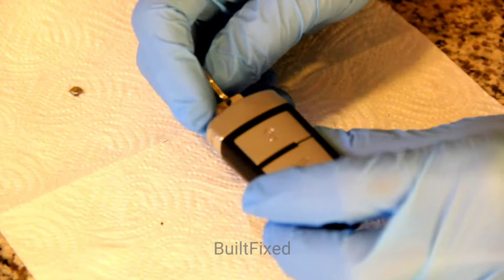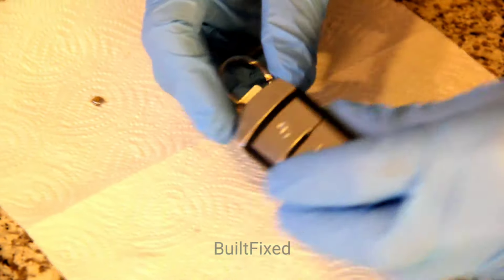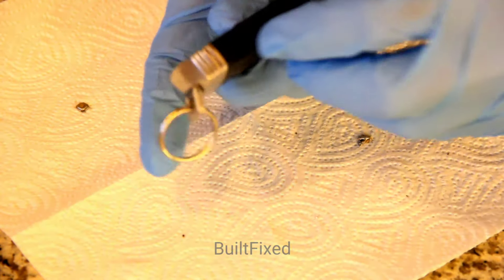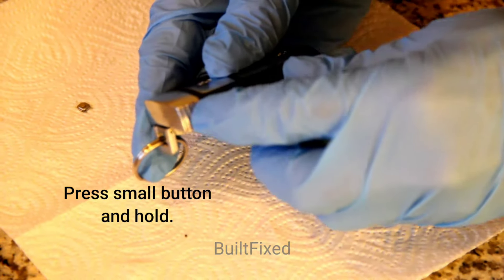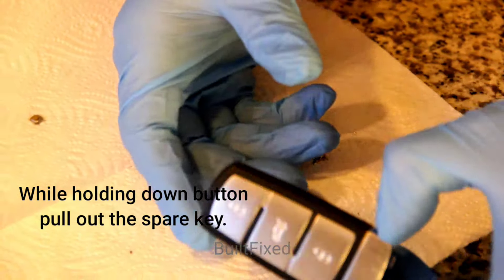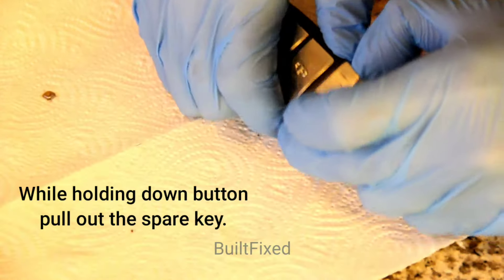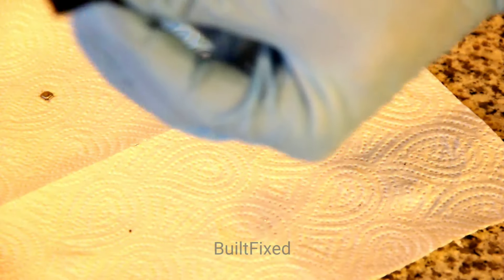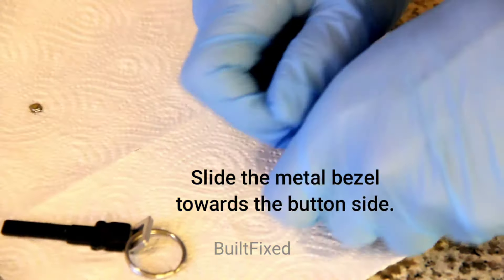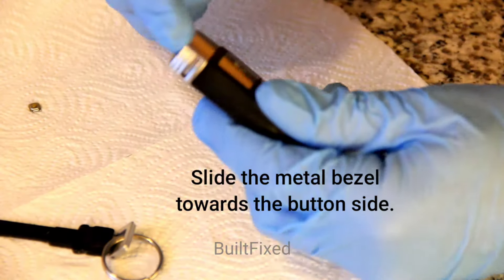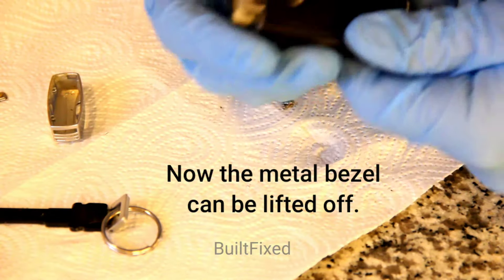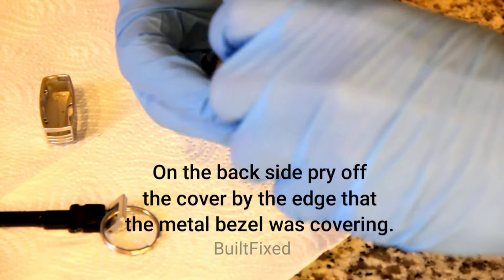So here are the basic steps to, first of all, take apart your three-button key fob from VW or Audi. Press a small detent right here on the side. After it's pressed, you're able to slide out the key. Now firmly grab the key fob and you want to slide this metal bezel to the side. It slides towards the button and then pops off. Now you can pry back this cover here.